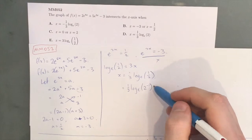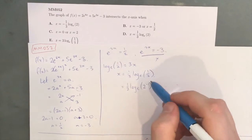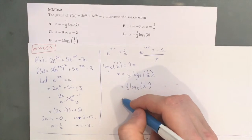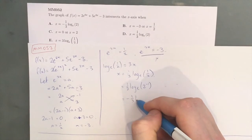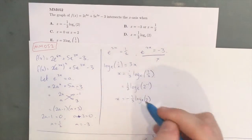Because 2^(-1) is equal to 1/2^1, which is a half. Using our power log law, we can bring this -1 out to the front and get -(1/3)log_e(2), which is our answer A.